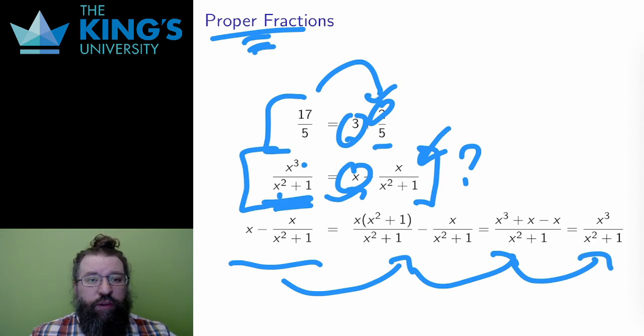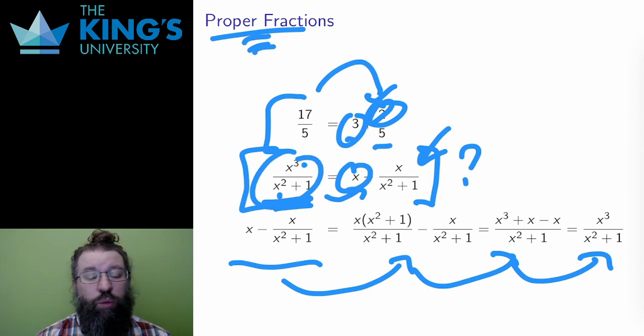So, to make 17 fifths proper, I did division with remainder. 17 divided by 5 is 3 with remainder 2. Well, I can do the same thing with polynomials. x cubed divided by x squared plus 1 is indeed x with remainder negative x.